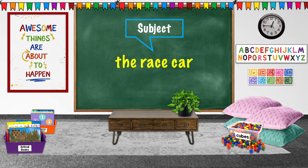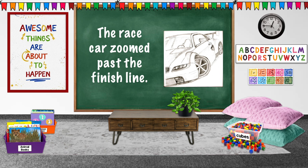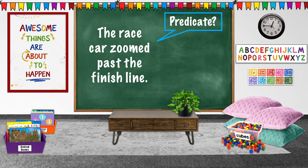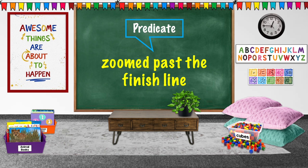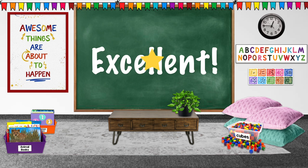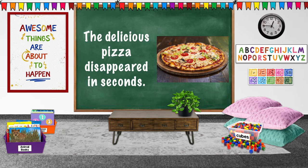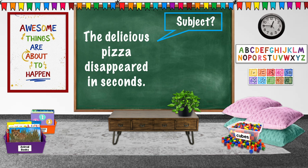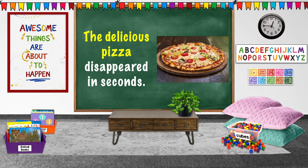What did the race car do? Did you think zoom past the finish line? That's the predicate. Excellent! Let's try one more. The delicious pizza disappeared in seconds. Who or what is the sentence about? The delicious pizza. Yes, that's our subject.